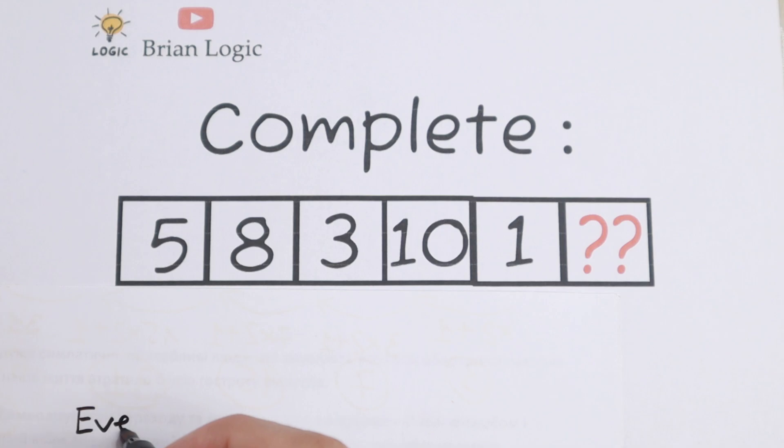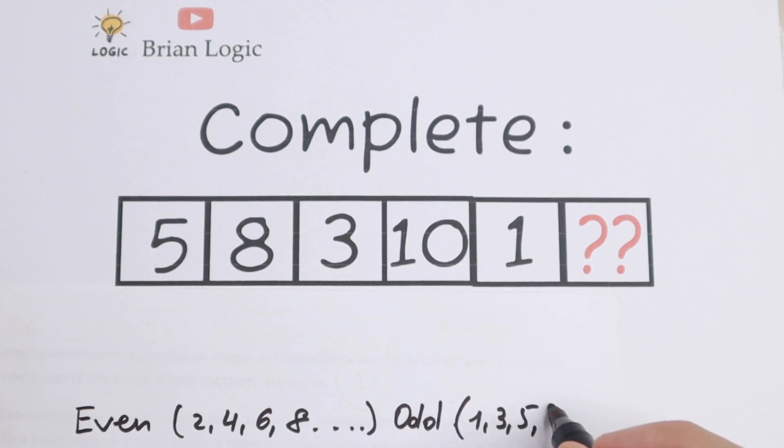So even number, we all know that even number is 2, 4, 6, 8 and so on. And odd number, we all know odd number. Odd number is 1, 3, 5, 7 and a lot of odd numbers.